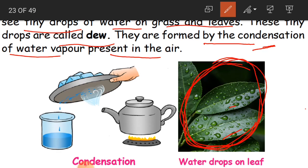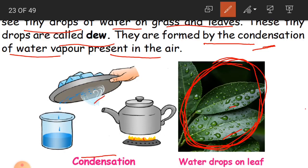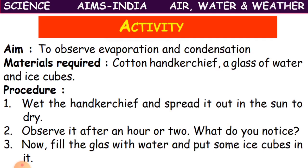To recap condensation: when you heat water in a vessel and place a lid on it, the boiling water vapor touches the cool surface of the lid. After getting cooled, this water vapor becomes water droplets. That is condensation.